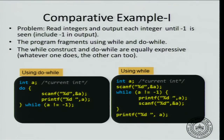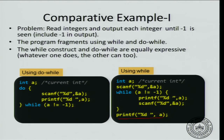Let us solve this problem using the while construct. Initially you declare a variable, then scan the variable. If the variable is minus 1, you immediately exit the loop, print minus 1, and finish the program. If the number is not minus 1, you print it and repeat the loop. If it is minus 1 you exit and print the minus 1 that you saw. Notice that when you exit the loop you need a printf statement, and before entering the loop you need a scanf statement.